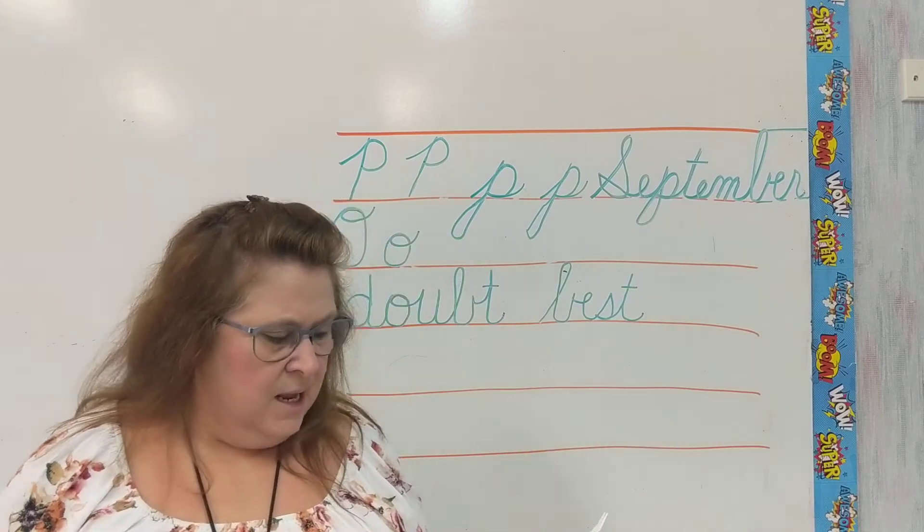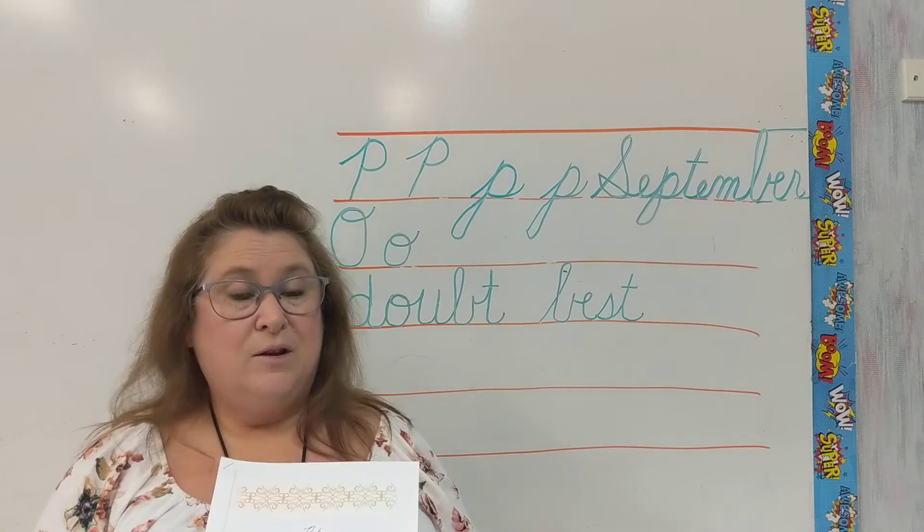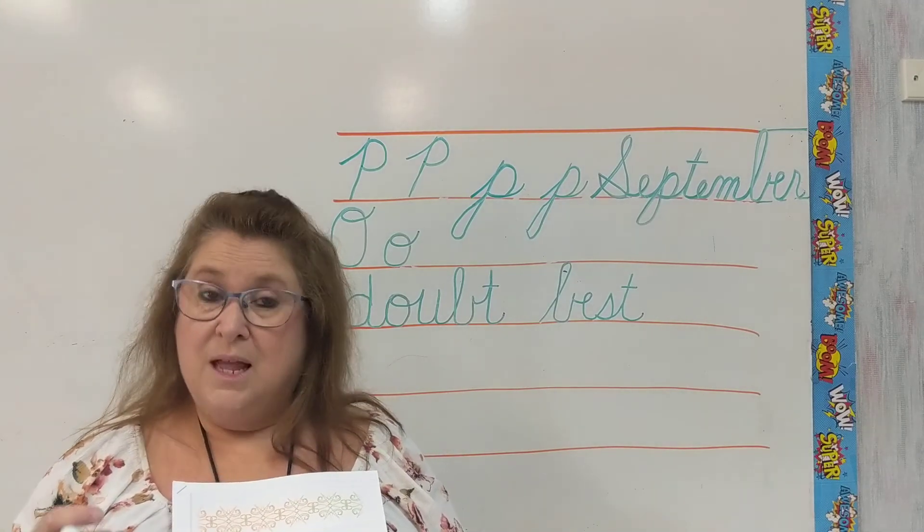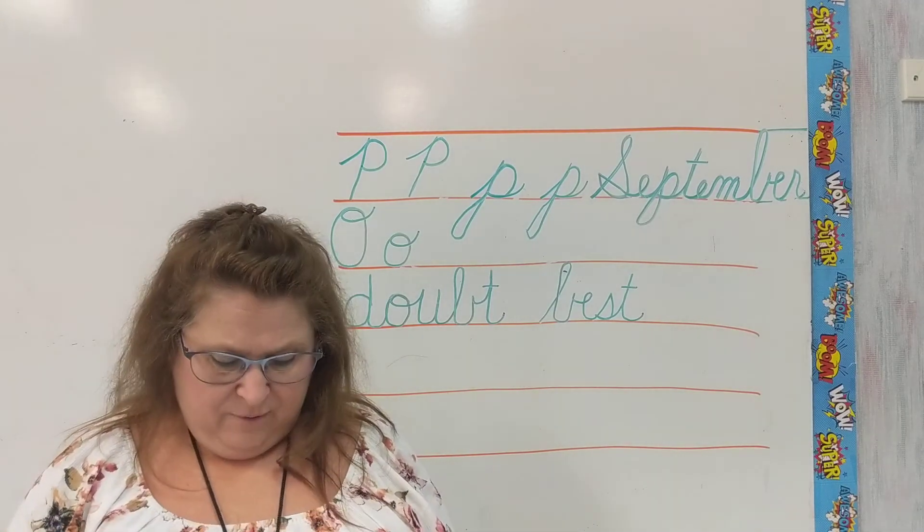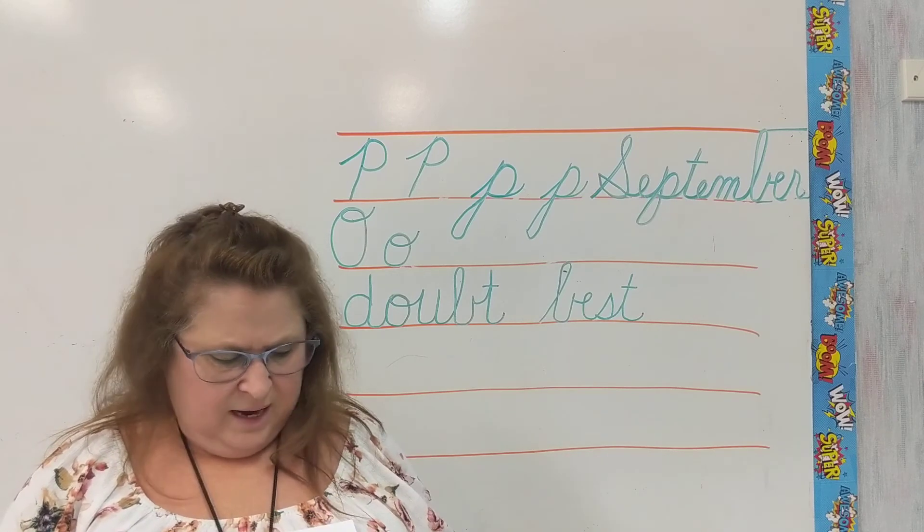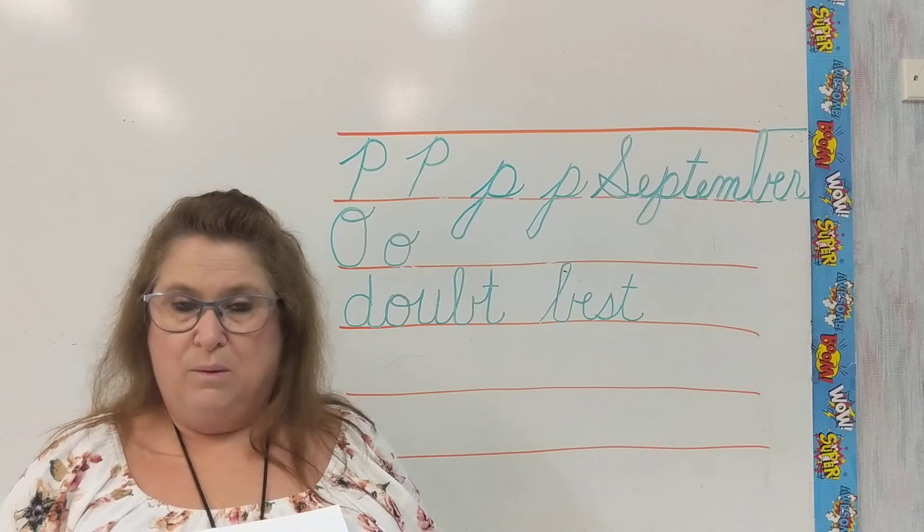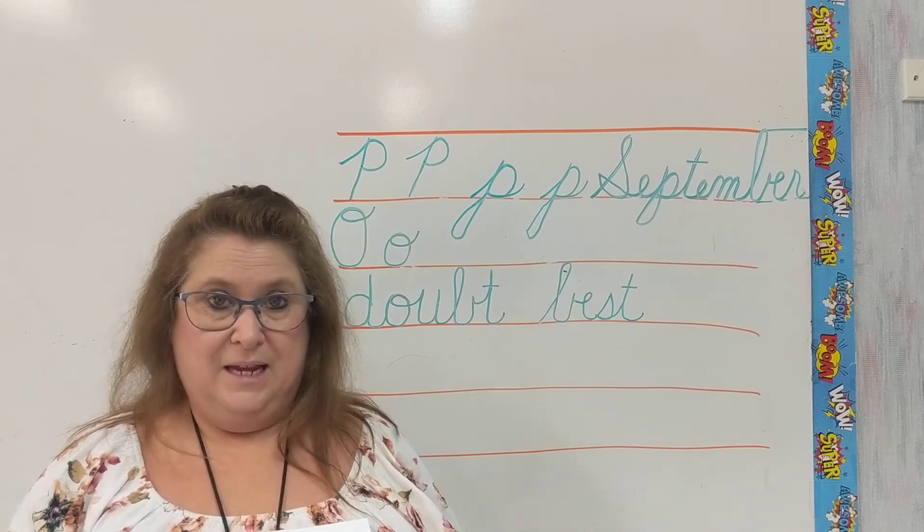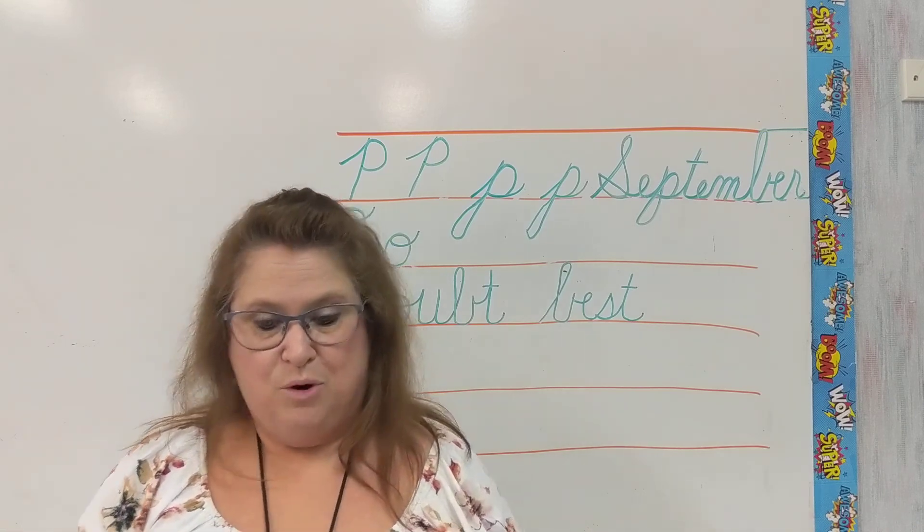So once again, your writing says trace and write. So you need to trace and write. Do both so you can have a good grade. And then up here, four to five letters of each on the line. September, you can just write it one more time. And then you have your O's and copy and trace. Y'all do your best work.